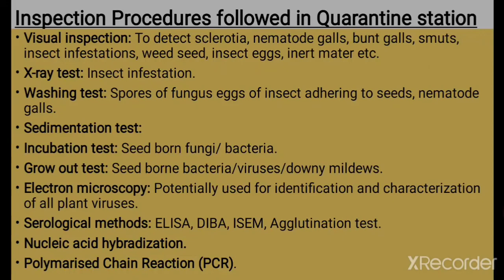In the grow-out test, seed-borne bacteria, viruses, or downy mildews are checked. Electron microscopy is potentially used for the identification and characterization of all plant viruses. Serological methods such as ELISA, DEBA, ICEM, and agglutination tests are performed. Finally, nucleic acid hybridization and PCR — polymerase chain reaction — are also used. These are the inspection processes followed in quarantine stations.